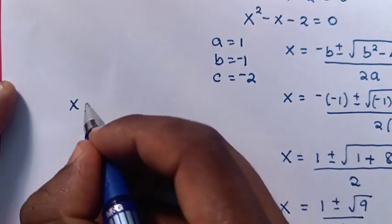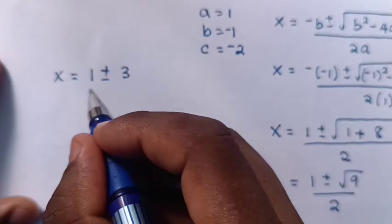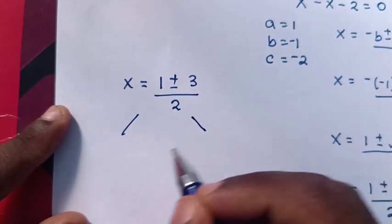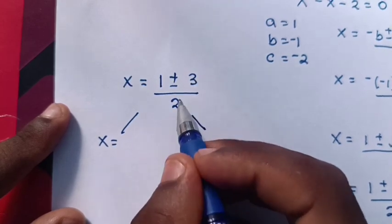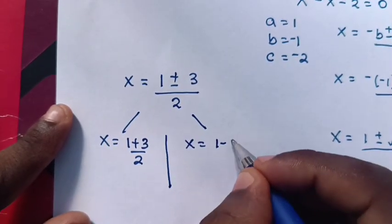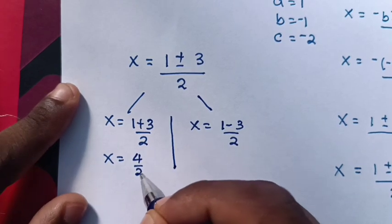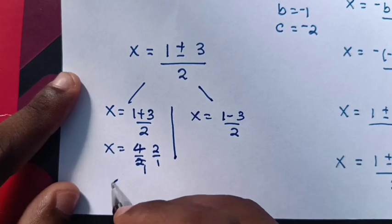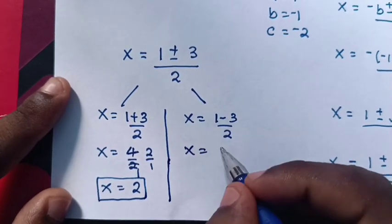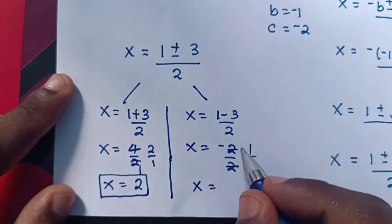So x equals 1 plus or minus square root of 9, which is 3, over 2. We have two cases: x equals 1 plus 3 over 2, which gives 4 over 2 equals 2; and x equals 1 minus 3 over 2, which gives negative 2 over 2 equals negative 1. So the two values of x are 2 and negative 1.